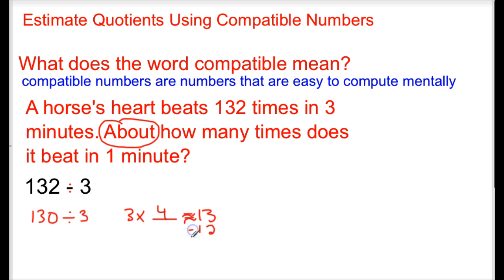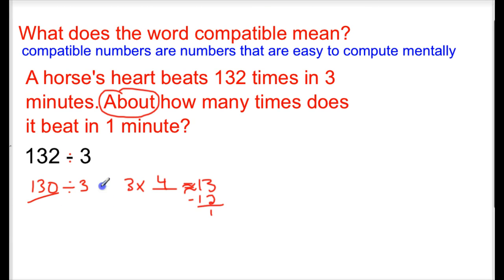But when we subtract it, we got a remainder of 1, and we know that when we are working with rounding or trying to estimate, we're not going to have any remainders in our work at all. So we had to come up with a different estimation.